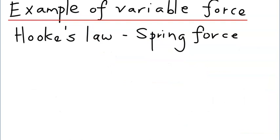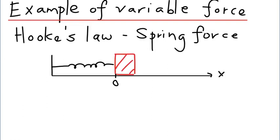Let's look at an example of a variable force — the spring force — given by Hooke's law. In this diagram you have a spring that is connected to an object. The spring in this case is not stretched; it is at its rest length. It is not compressed or stretched.